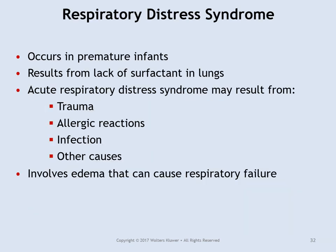In premature infants, respiratory distress syndrome occurs when there is not enough surfactant. Surfactant lowers surface tension and allows easy expansion of the lungs. Without enough surfactant, the lung mucus is too thick and you can't get good gas exchange.